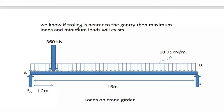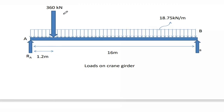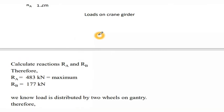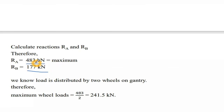When the trolley is near the gantry, maximum loads will exist. The minimum approach distance is 1.2 m and the total crane span is 16 m. Calculating RA and RB: RA equals 483 kN and RB equals 177 kN. So the maximum reaction is 483 kN.